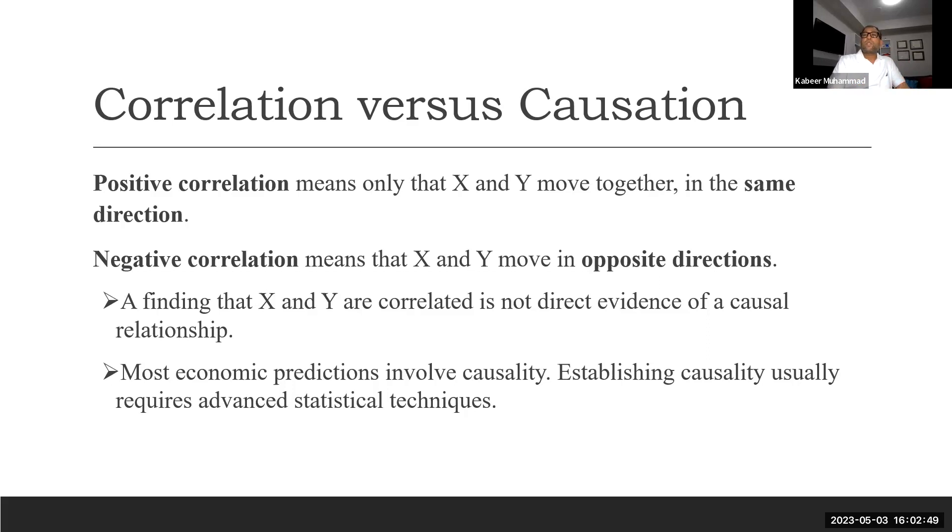Negative correlation is not decreasing. It's negative that one is increasing, the other is decreasing. If X is increasing, Y is decreasing. And if X is decreasing, Y is increasing. That type of relationship is called negative correlation.